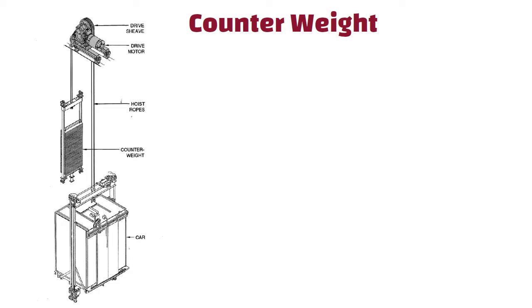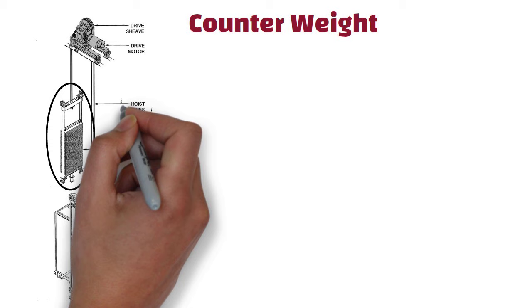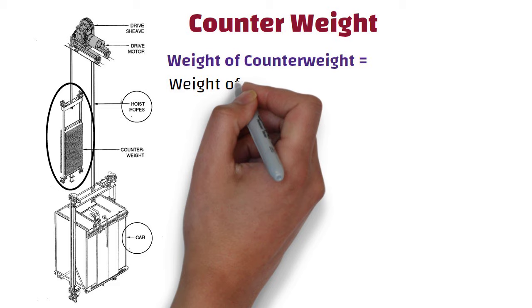Counterweight is a unit consisting of steel weights which counterbalance the weight of the car, and to which the suspension ropes are attached. The weight of the counterweight is equal to the weight of the car itself plus 40 to 50% of the total weight it can carry.